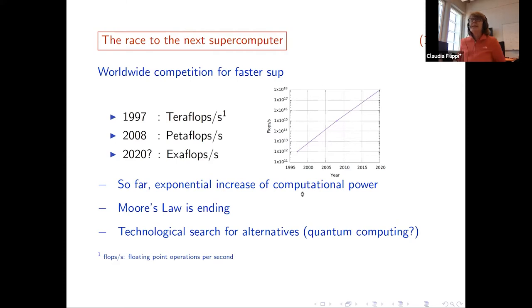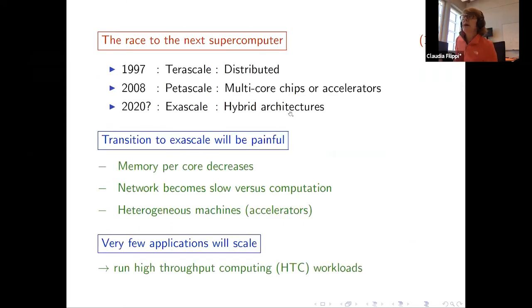But for us, what this means is that we went from the 90s from distributed parallelism to multi-core chips or accelerators. And now, what we expect, what is inevitable, are hybrid architectures. Okay, so the transition - we need to do this transition of our codes which are well-suited for petascale, and we need to do this transition to exascale, and we know that it will be painful.